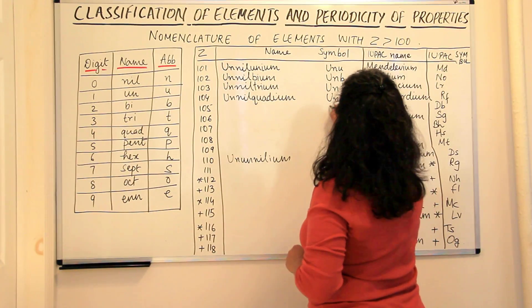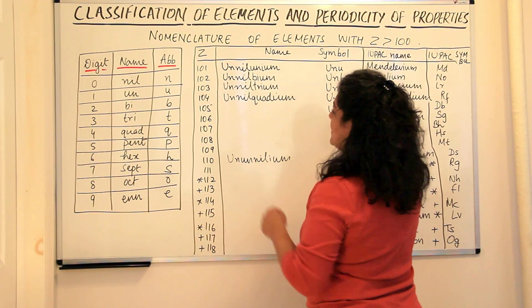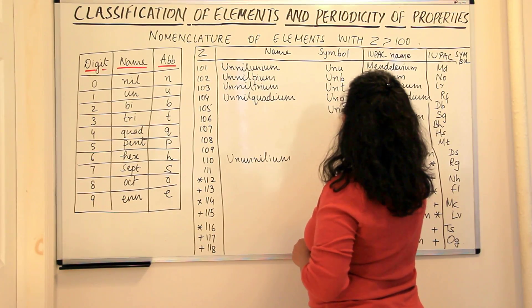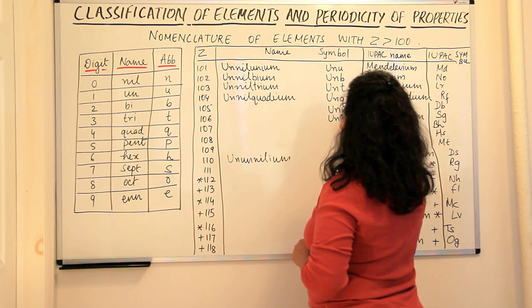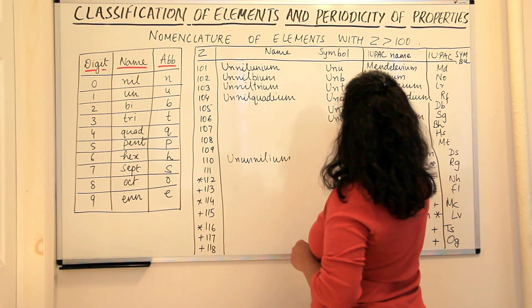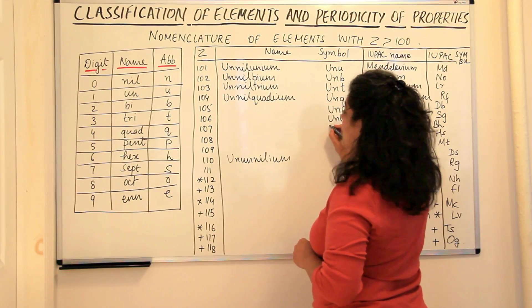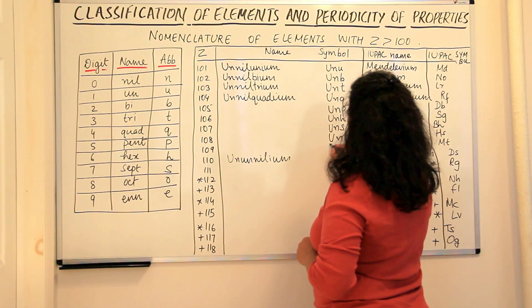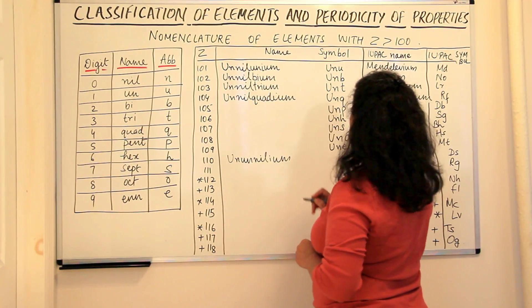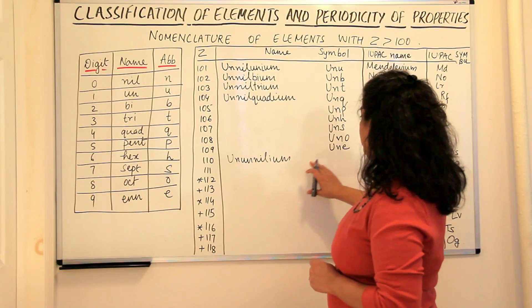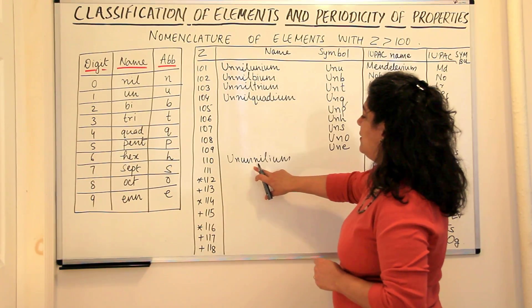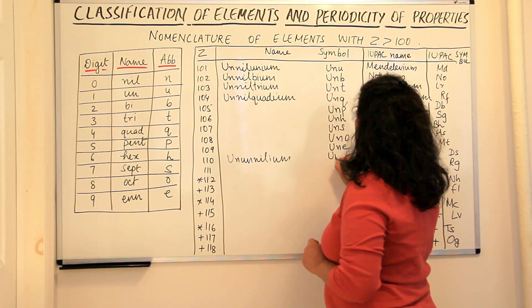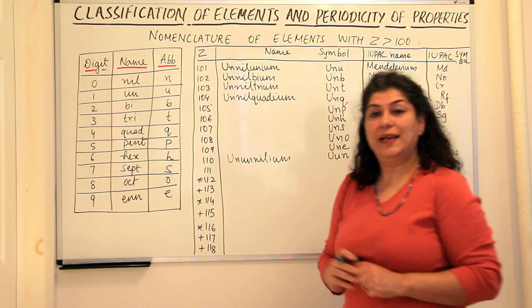And the symbols would also be: pent is P, so UNP. UNQ for quad, UNH for hex, UNS for sept, UNO for oct, UNE for ennium, that is 109. And ununnnilium would be 110, so it would be UUN would be the symbol of the element.